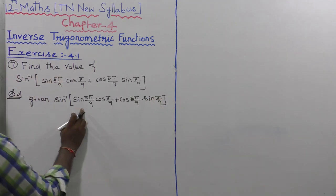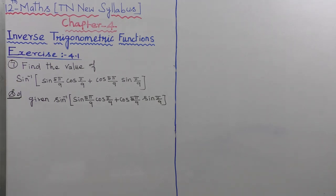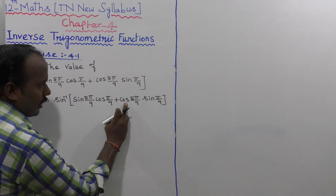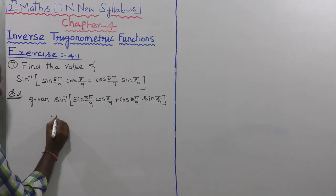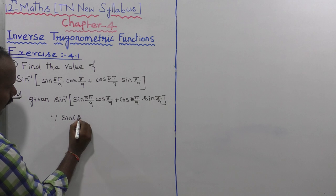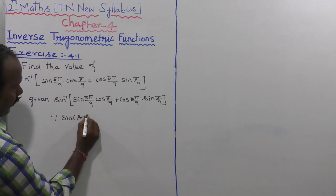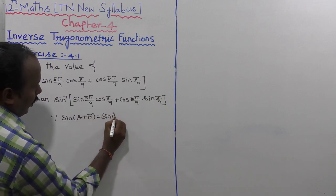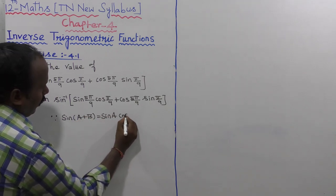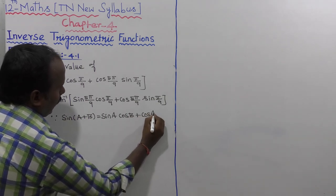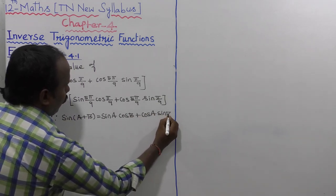We apply the trigonometric formula for sin(A + B), which states: sin(A + B) equals sin A cos B plus cos A sin B.